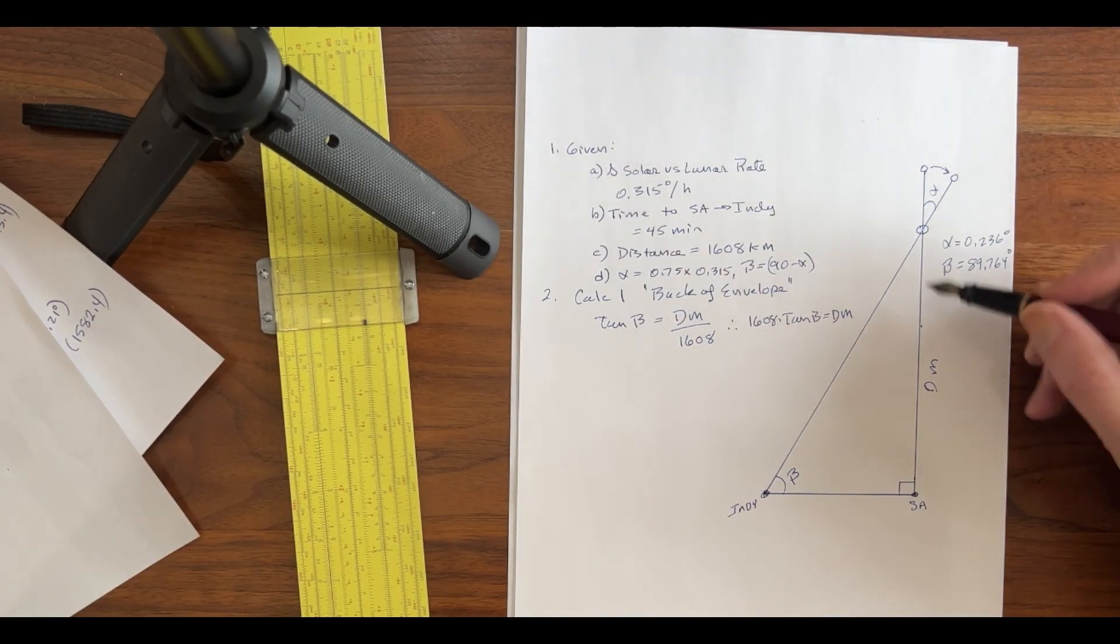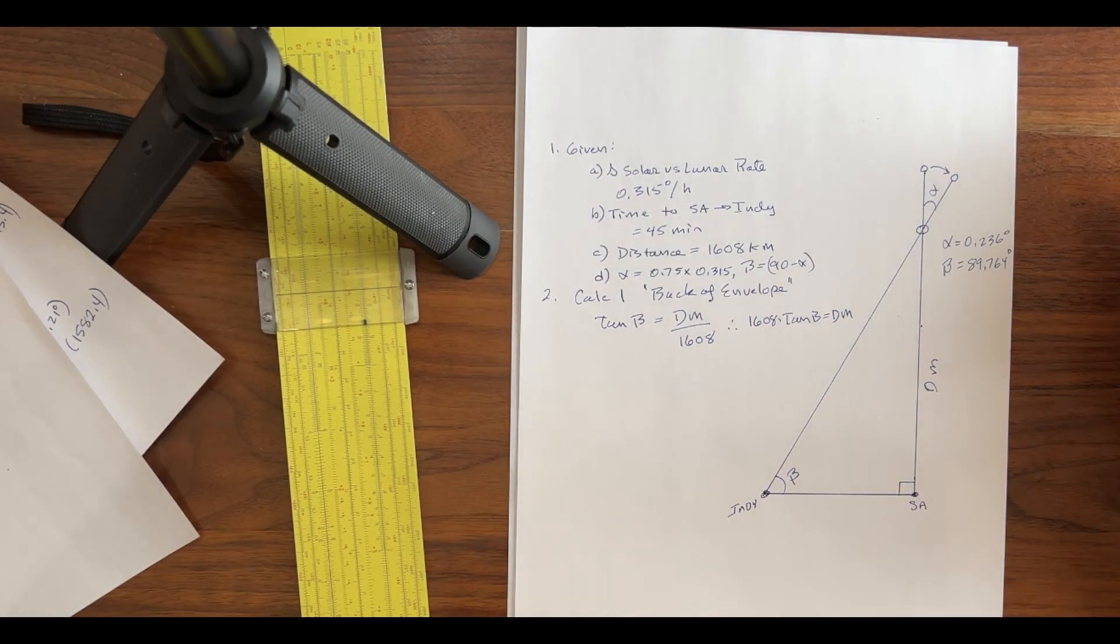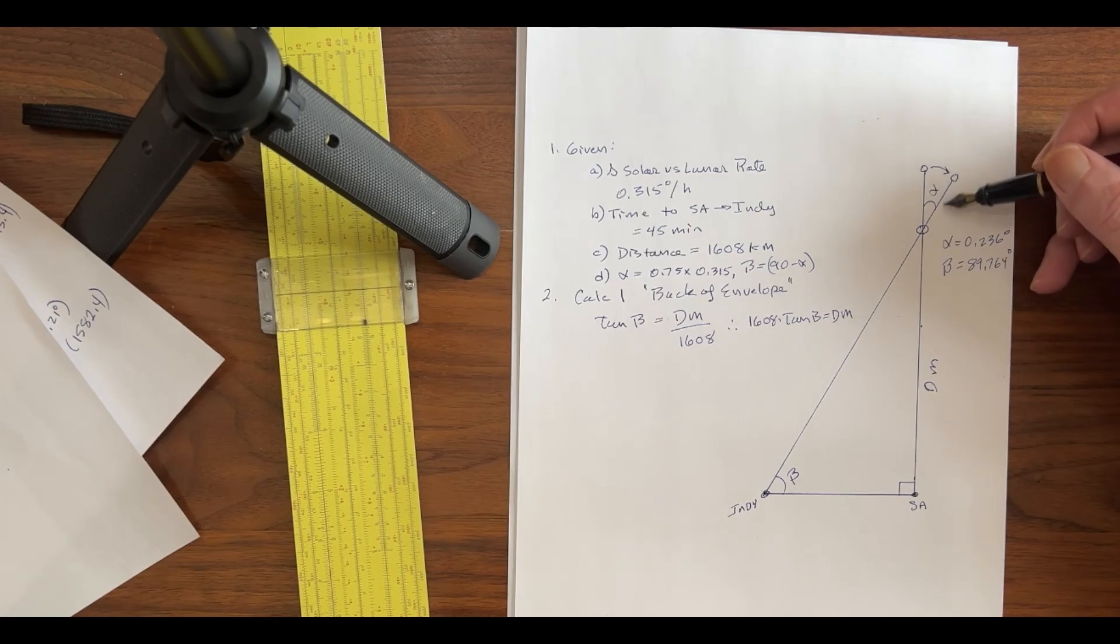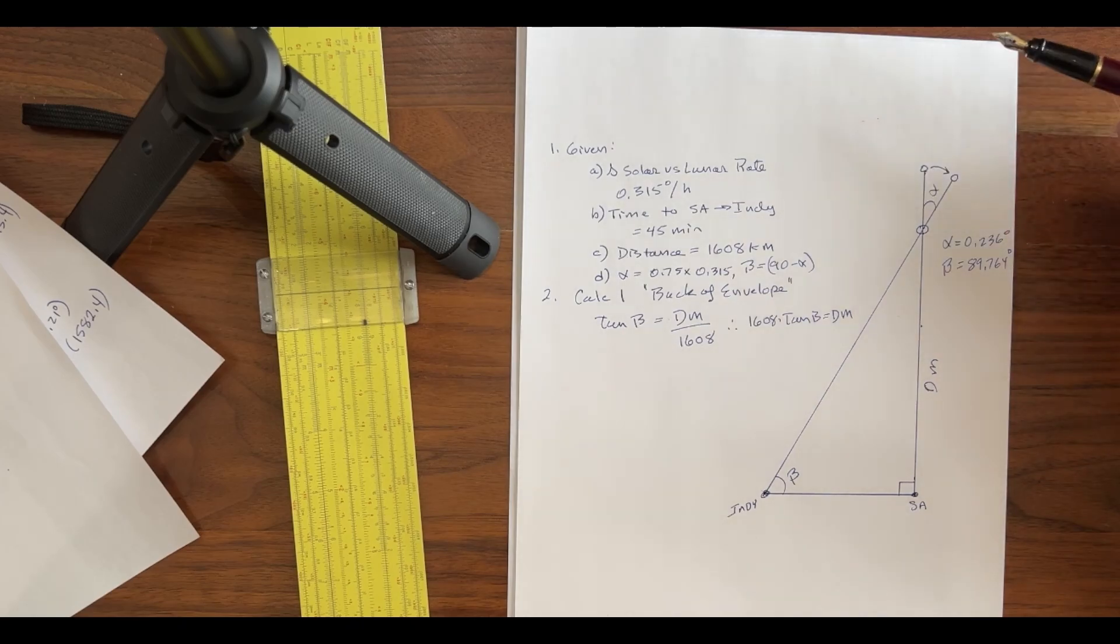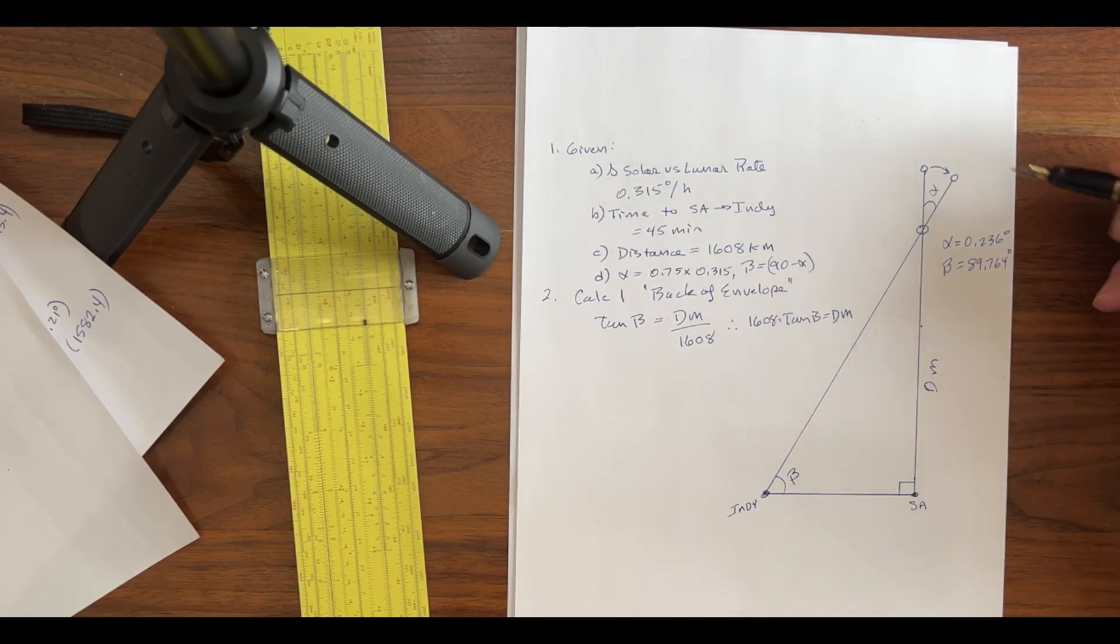The distance between San Antonio and Indianapolis is 1,608 kilometers by Google Earth. Now, we're going to form a triangle from the Moon to San Antonio to Indianapolis, Indiana. And this top angle, angle alpha, is going to be 0.75 for 45 minutes, that's three quarters of an hour, times 0.315. So, that's going to give us an angle at the apex of 0.236 degrees.